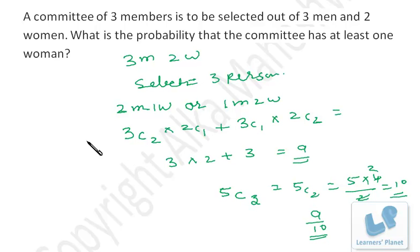Alternatively, what you can do is take all the events when there is no woman in the committee. That means the three members which are male, and out of these three members I am selecting all the three members. So this is the case when there is no woman. So these are the favorable cases, and total cases are 5C3, which is 10, and 3C3 is 1. So this is 1 by 10.